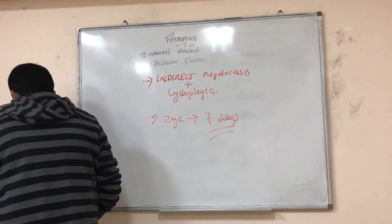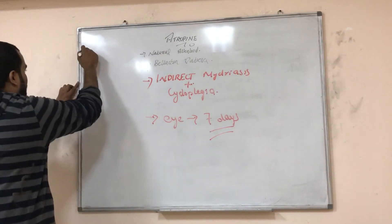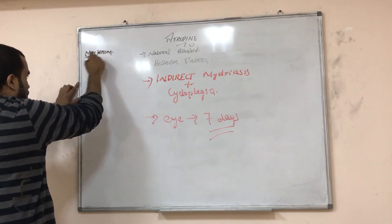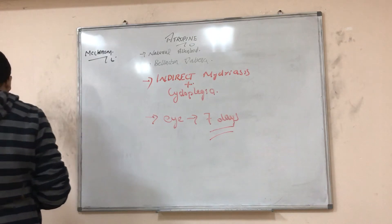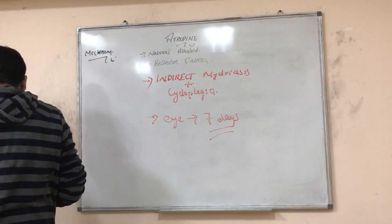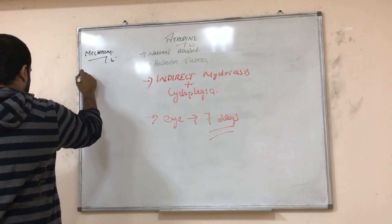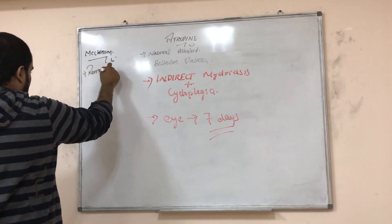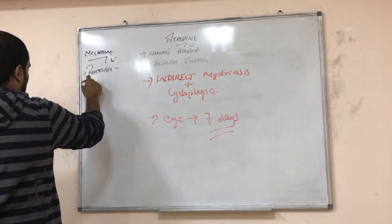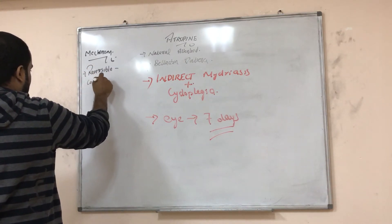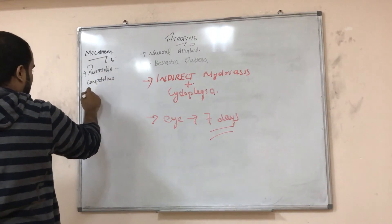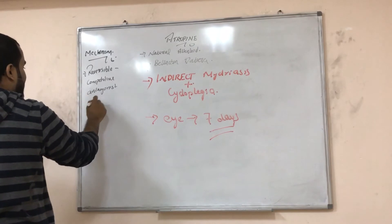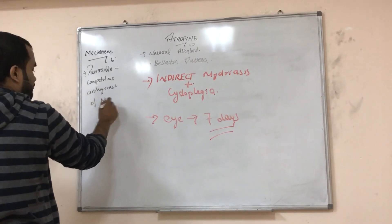What is the mechanism of action of atropine? Atropine is a reversible competitive antagonist — a reversible competitive blocker or antagonist — of all M receptors, M1 to M5.